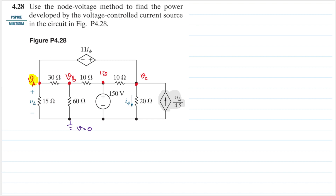We have a dependent voltage source between Va and Vc, so we will treat that as a supernode — the portion highlighted in yellow. Let's assume the directions of the currents: this one going down, this going to the right, this going down, this going to the right, this going to the right, and this going down. This one goes up because I'm following that current source.